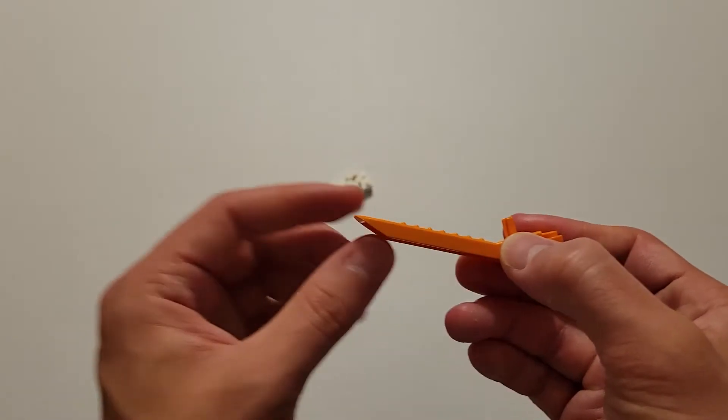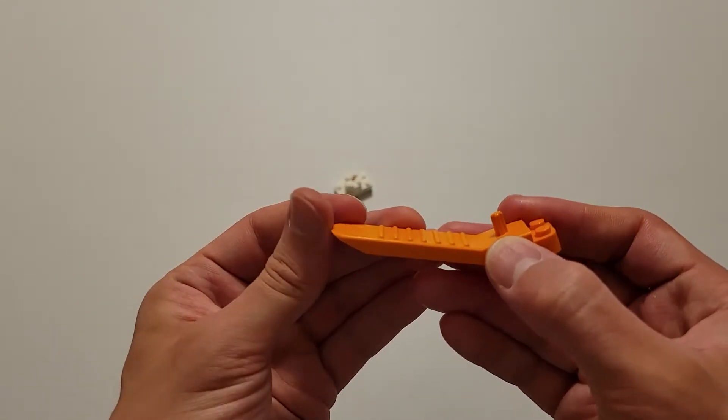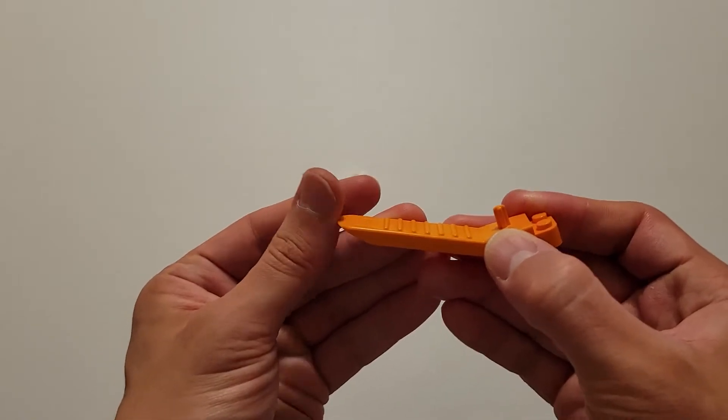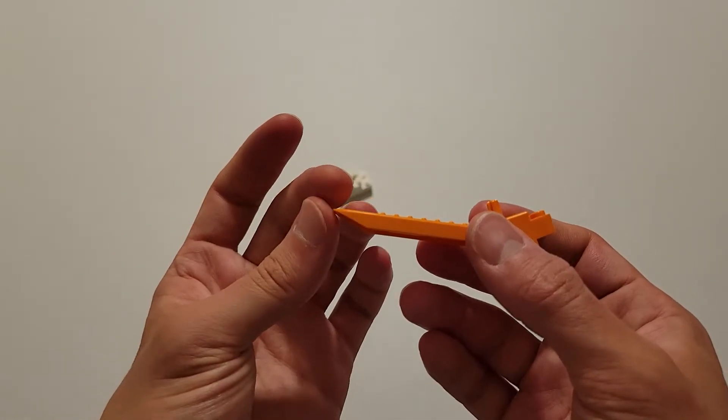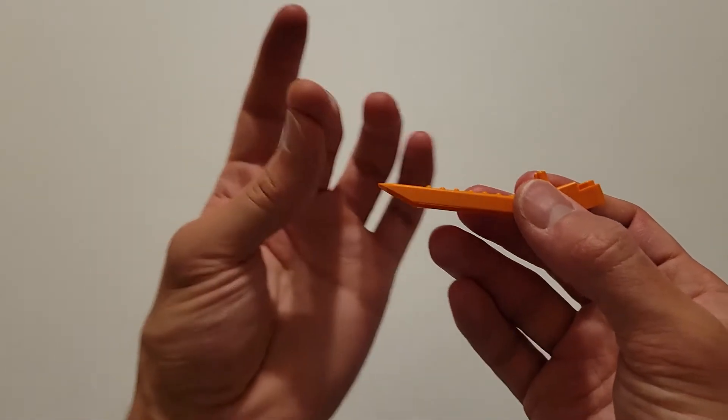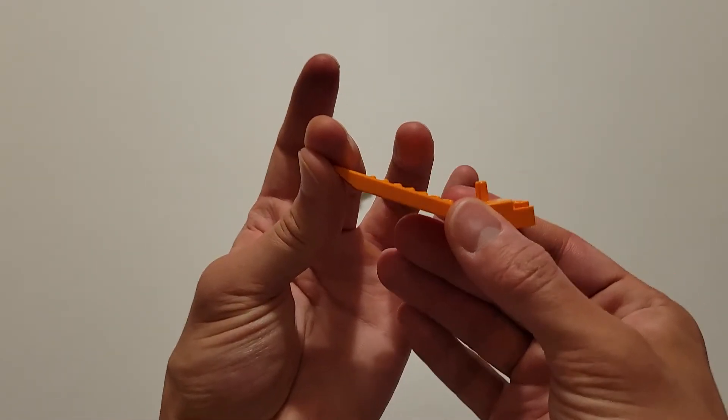So starting at the left here, you'll see that this end is tapered. And this edge right here is actually reasonably sharp. And so what you can do is if you have two Lego pieces that are stuck together, you can use this end to get between them and then pry them open.